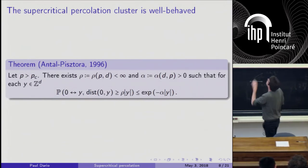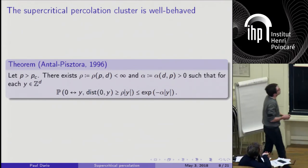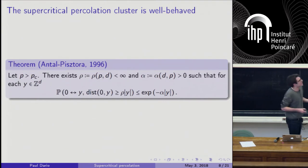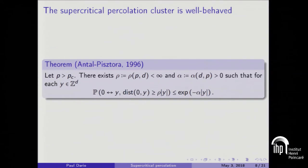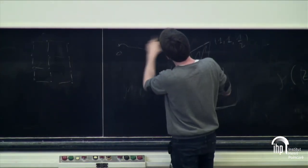The second result, coming six years later, was an open question for some years and was solved by Anton and Pistora. The question is: if I take two points x and y in the infinite cluster and look at the distance between x and y in the infinite cluster, does it look like the Euclidean distance? What they proved is that there exists a constant rho — depending on P and D — such that the probability that zero is connected to y in the cluster and the distance is bigger than rho times the norm of y is very small. Basically, this tells you there exists a path in the infinite cluster which is close to the straight line.